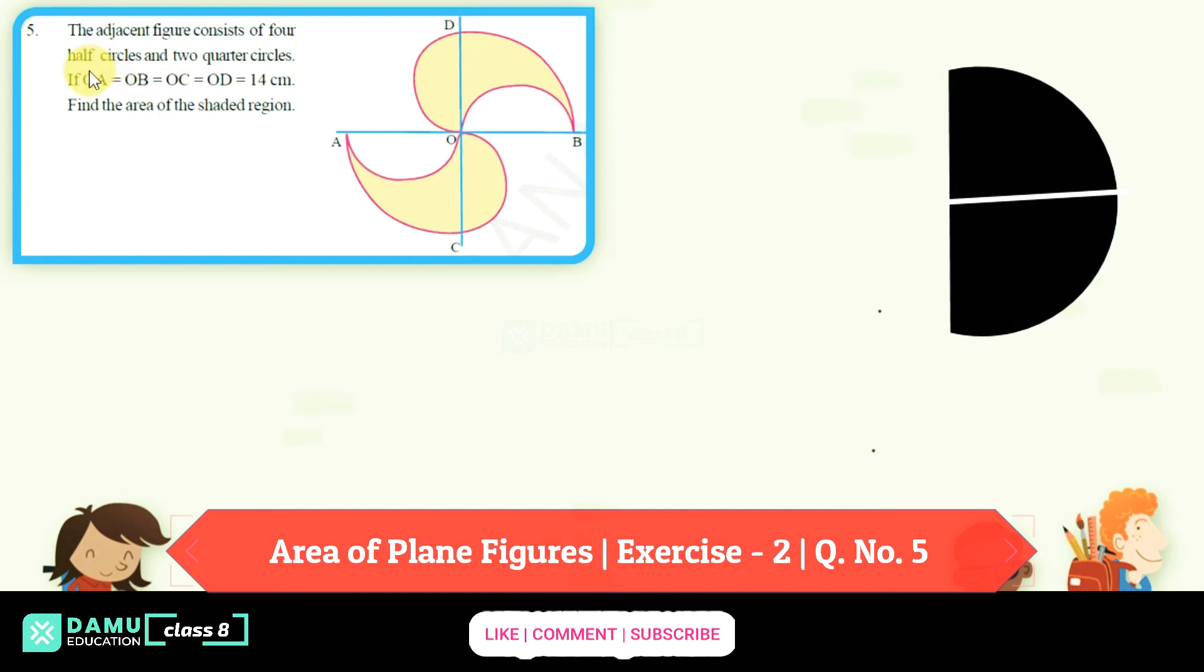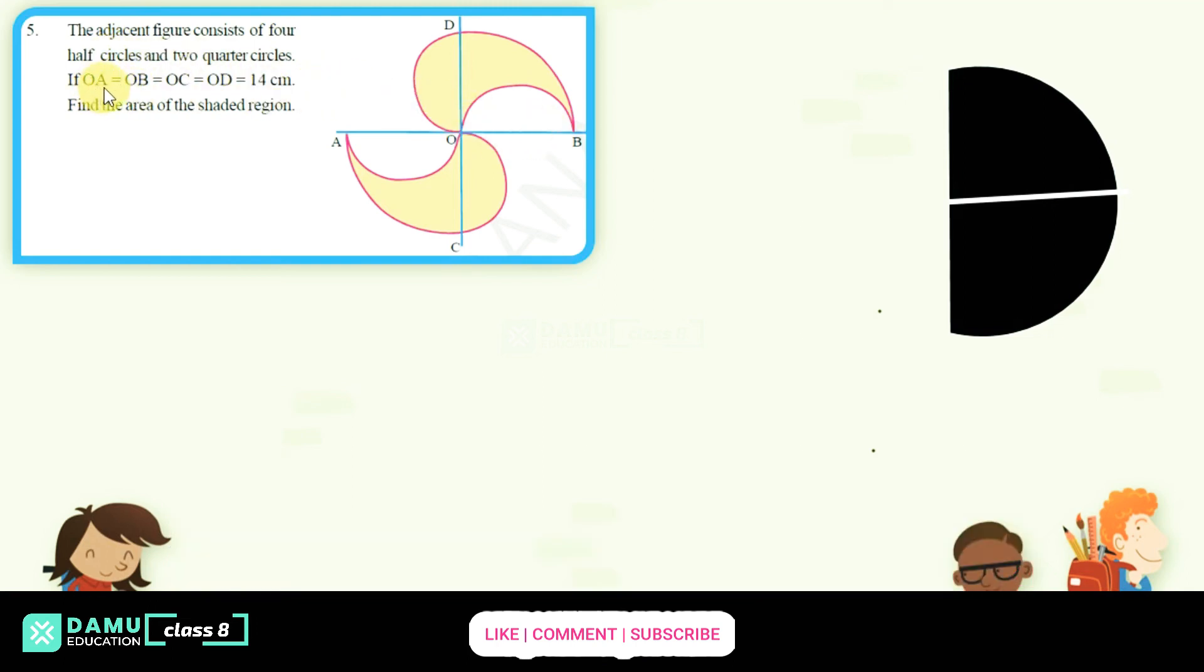In this video, we are going to discuss the 5th question solution. The adjacent figure consists of 4 half circles and 2 quarter circles. If OA equals OB equals OC equals OD equals 14 cm, find the area of shaded region.